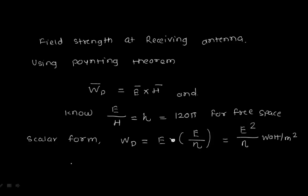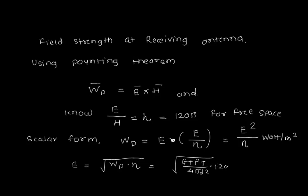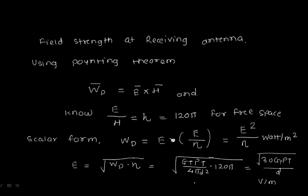Simplifying further, E equals the square root of Wd times eta. We know Wd equals Gt times Pt divided by (4 pi d squared), and eta equals 120 pi. Solving this gives E equals the square root of (30 times Gt times Pt) divided by d. The unit for electric field intensity is volts per meter, while power density is in watts per meter squared. This is how you calculate field strength at the receiving antenna.